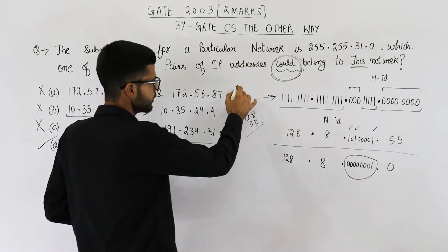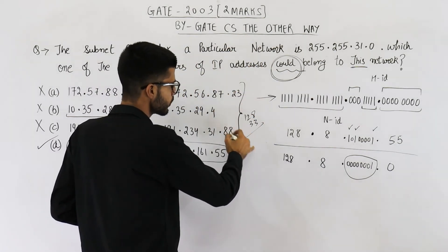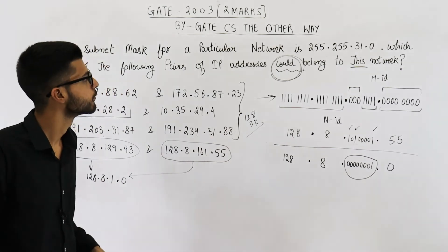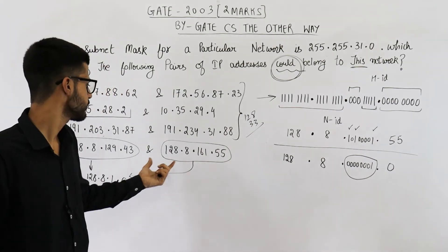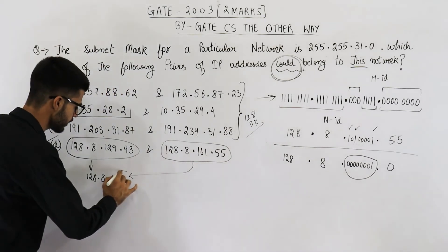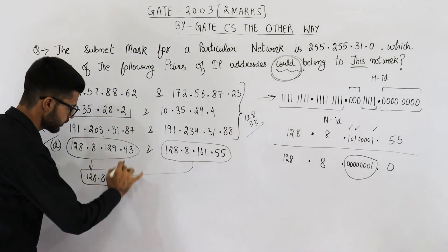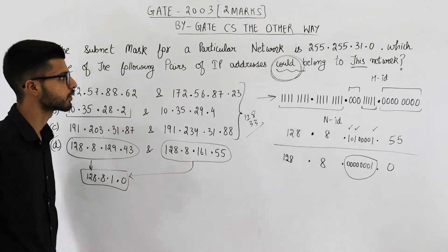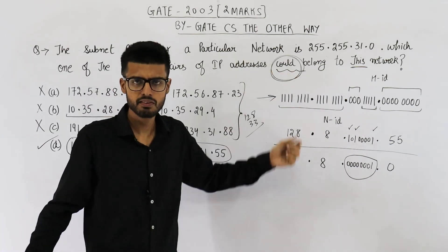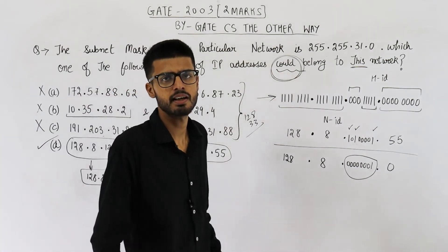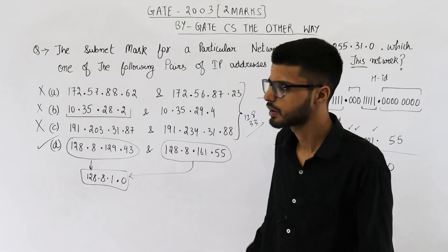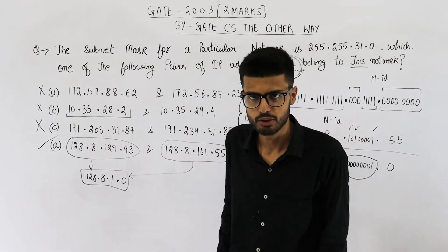For the first three options, the two IP addresses belong to different networks. Only in option D do both given IP addresses belong to the same network. So option D is the correct answer — the given pair could belong to the specific network they are talking about. The answer is option D. Thank you very much for watching this video.